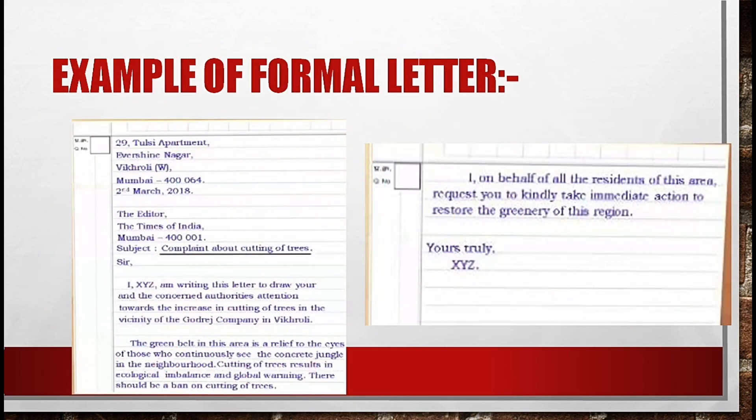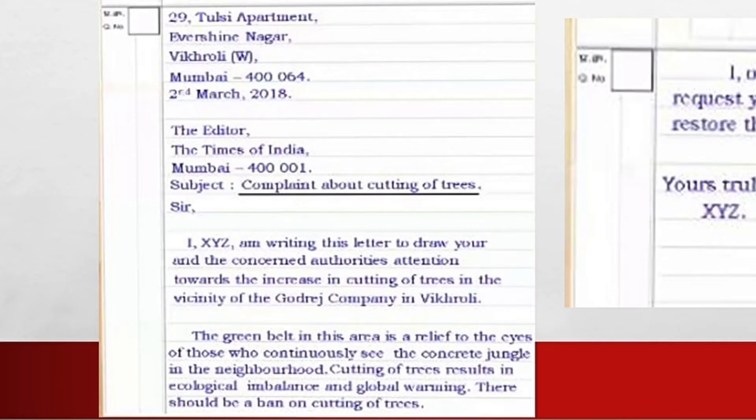Example of a formal letter. From address: 29 Tulsi Apartment, Avershine Nagar, Vikhroli West, Mumbai 400064. Date: 2nd March 2018. To address: The Editor, The Times of India, Mumbai 400001. Subject: Complaint about cutting of trees.